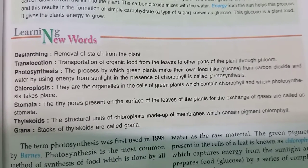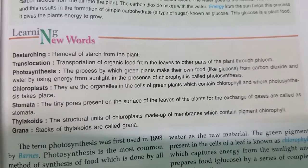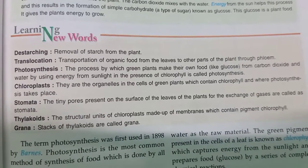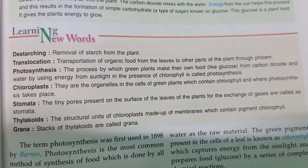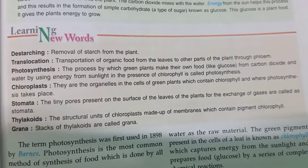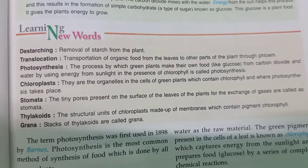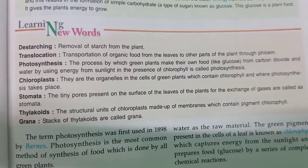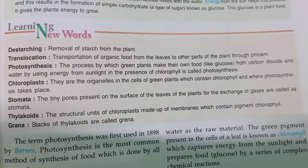Photosynthesis, as you all know, is the process of making food for green plants — the process by which green plants make their own food from carbon dioxide and water by using energy from sunlight and in the presence of chlorophyll. Chloroplasts are the organelles in the cells of green plants which contain chlorophyll and where photosynthesis takes place.